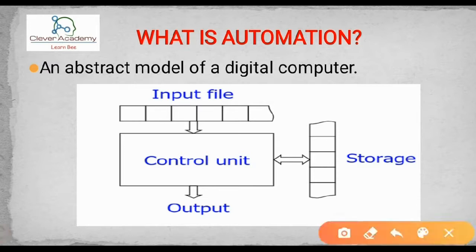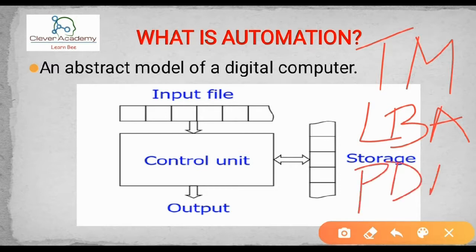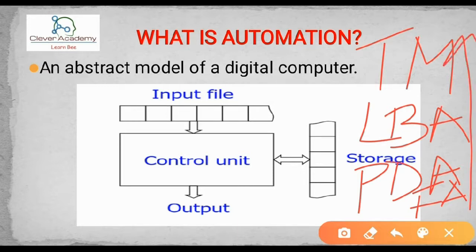When coming to the complexity of a particular automation, the highest complexity is Turing machines, then linear bounded automata, then push-down automata, and finally we are having the finite automata. So the order means we have to start from the finite automata and we need to learn about Turing machines.